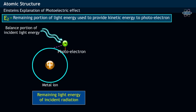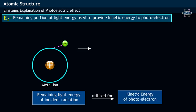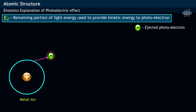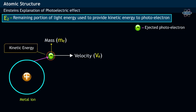The remaining portion of the energy of incident radiation is utilized to provide kinetic energy of photoelectron. Since ejected photoelectron has a mass Me and moves with velocity V, it is associated with kinetic energy. The kinetic energy of photoelectron is mathematically equivalent to half mV squared.